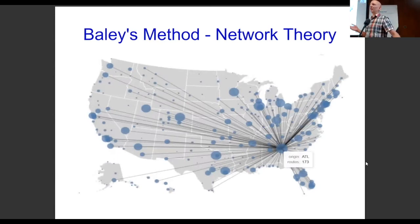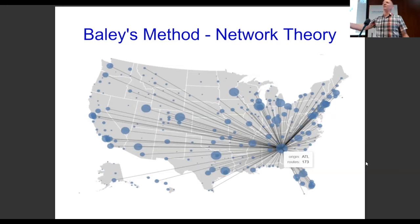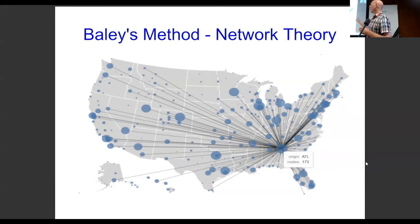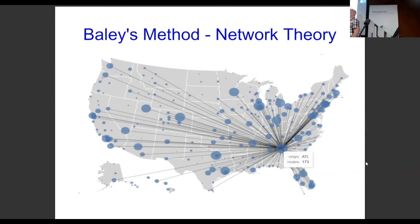Our study is based on network theory — I'm calling it network theory, James called it graph theory. If you use Facebook and they say 'do you know this person?' — that's network theory. Facebook treats people as nodes and relationships between people as edges. A network is just a way of representing relationships between objects. In our case, we're talking about rhyme words in Han Dynasty text. This graph here is showing flights out of Atlanta, Georgia — the bigger nodes have more flights, smaller nodes have fewer.